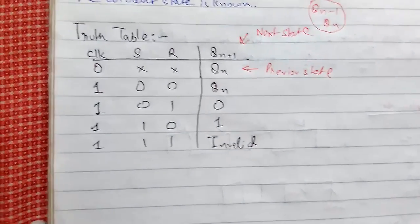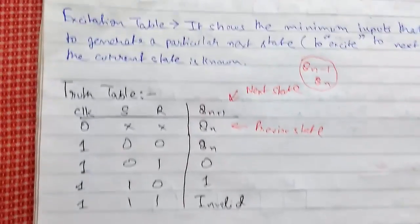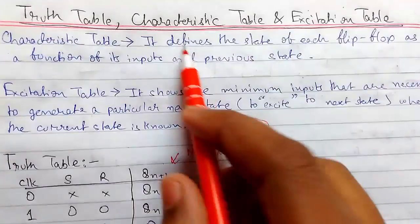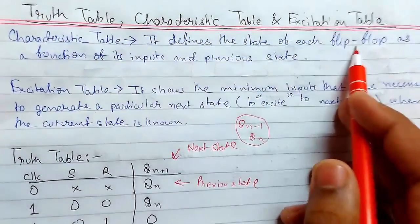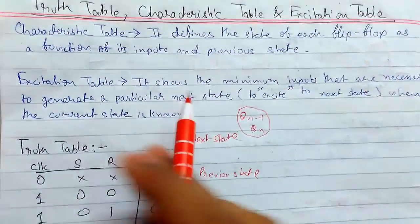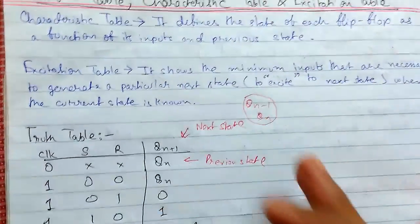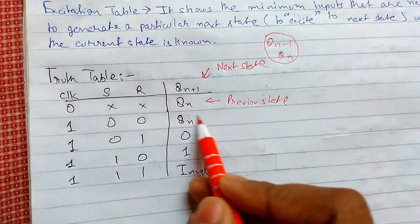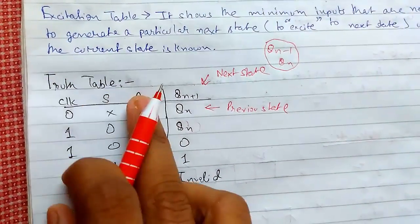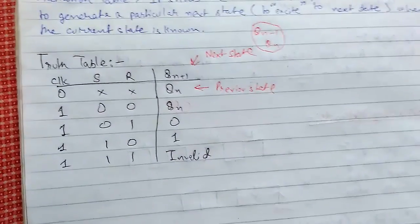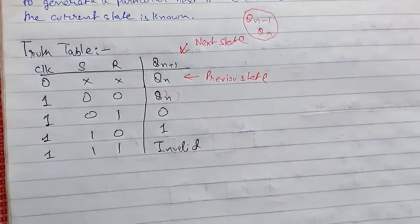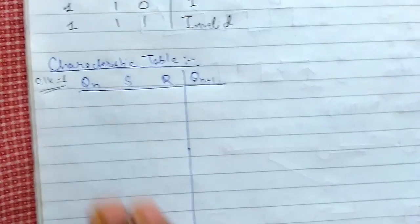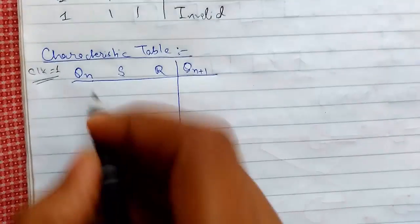Now we will see how the characteristic table looks. The characteristic table defines the state of each flip-flop as a function of its input and the previous state. Clock will be set to 1 — we will not write that, but we must know that clock is set to 1.